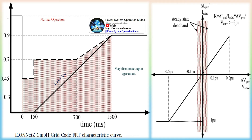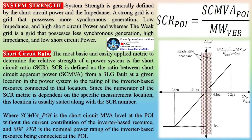Because of protection issues, HVRT capability is less noted in grid codes. For countries like France and India, FRT requirements depend on the voltage level at which the fault occurs. LVRT requirements of South Africa's grid code consist of four categories based on the generating unit's rated capacity. In the upcoming years, the majority of generation sources might be distributed energy resources and grid strength would be comparatively lower than the current scenario.